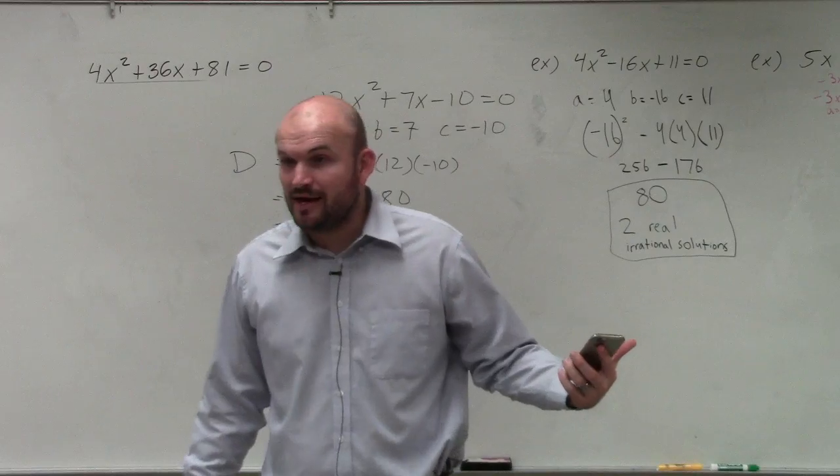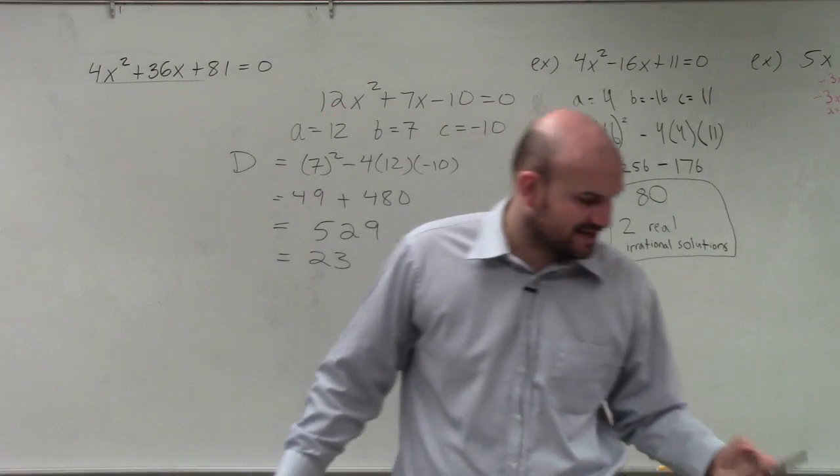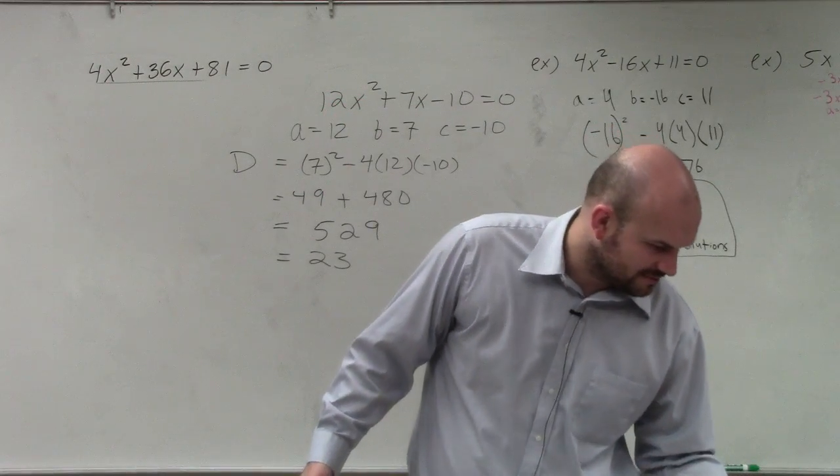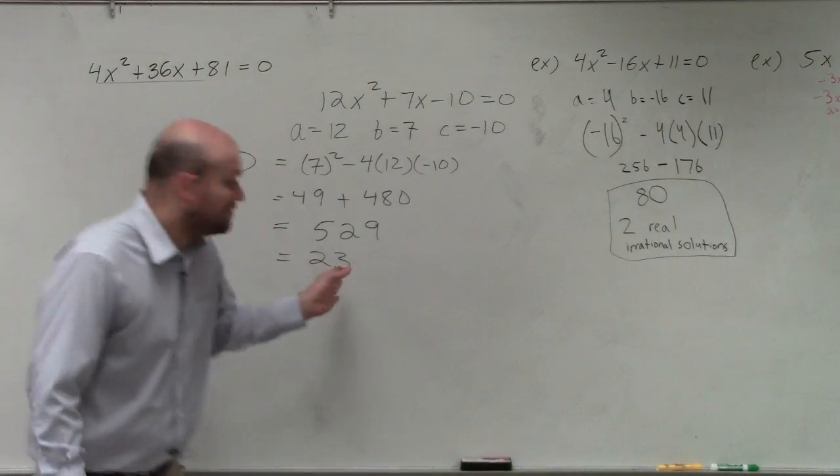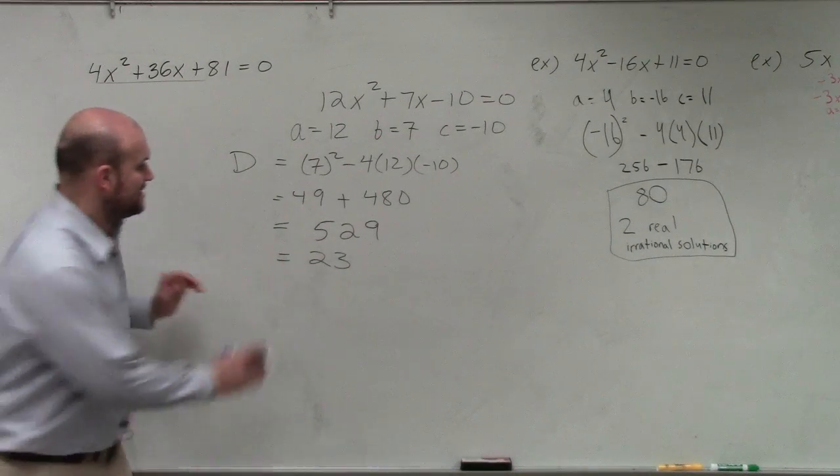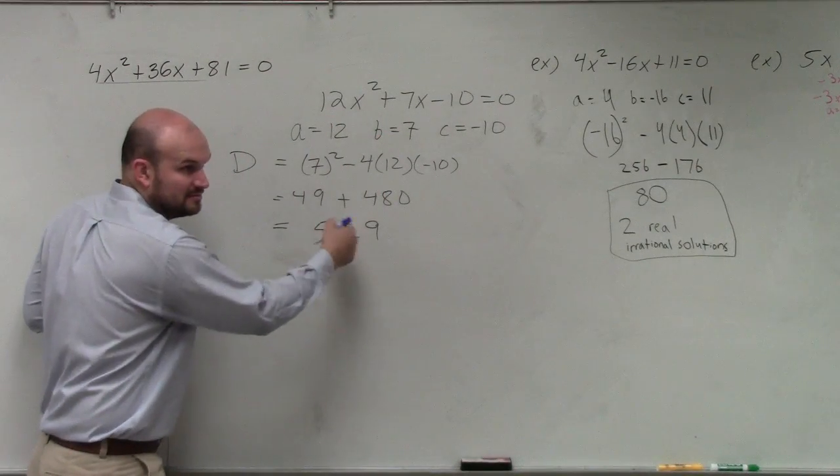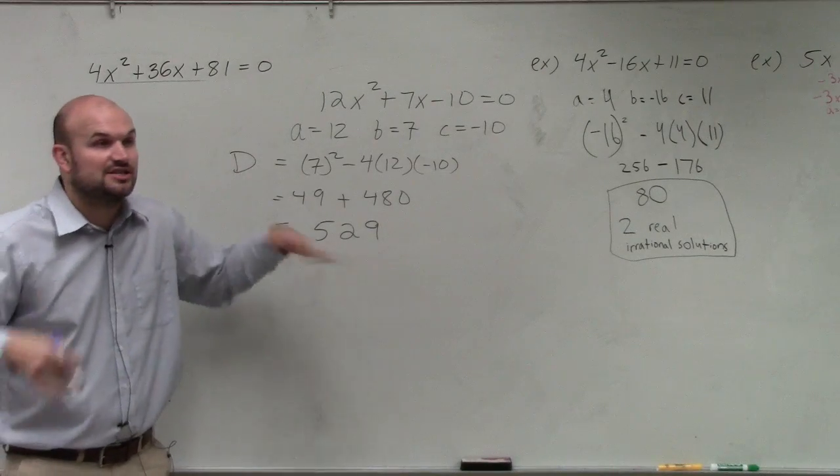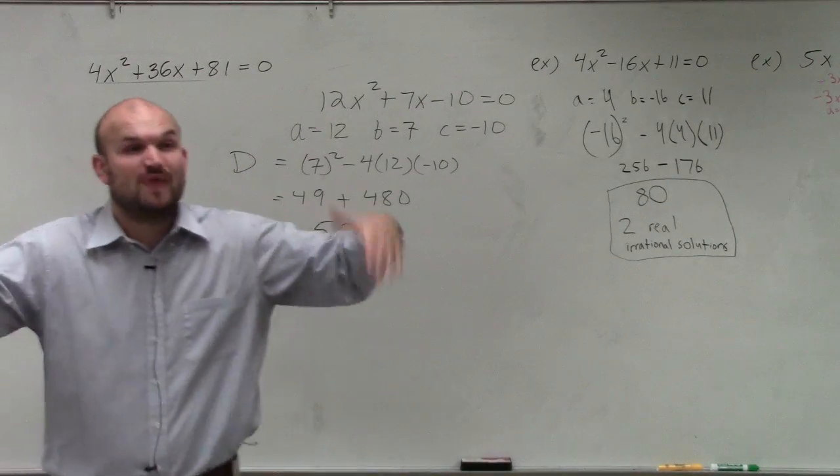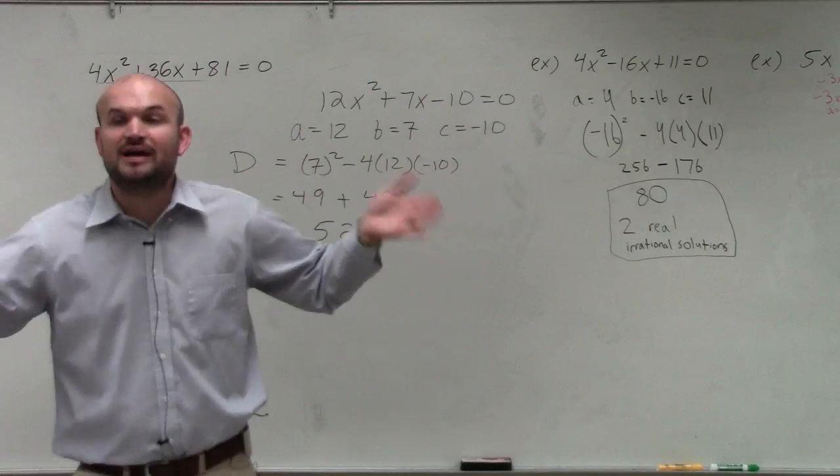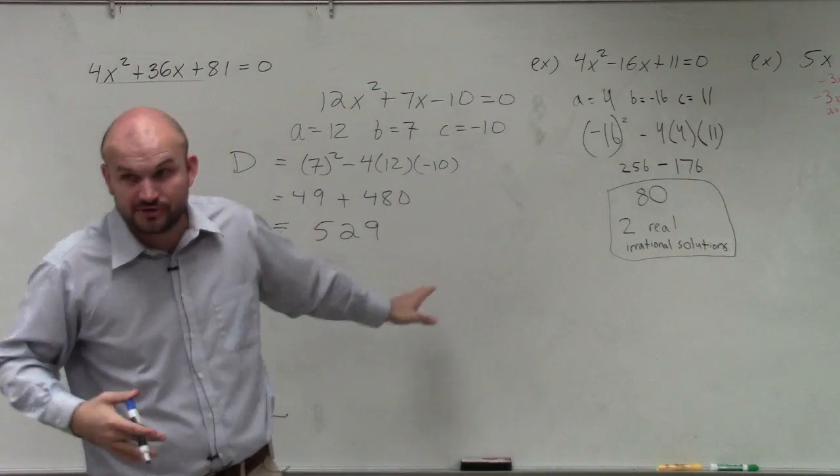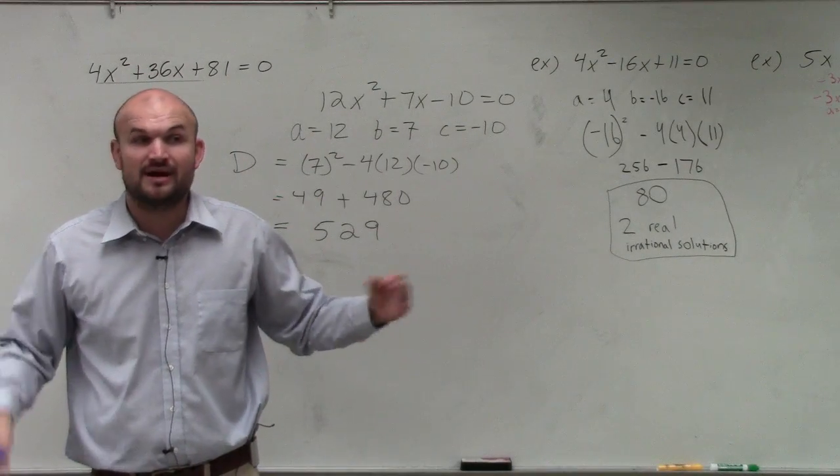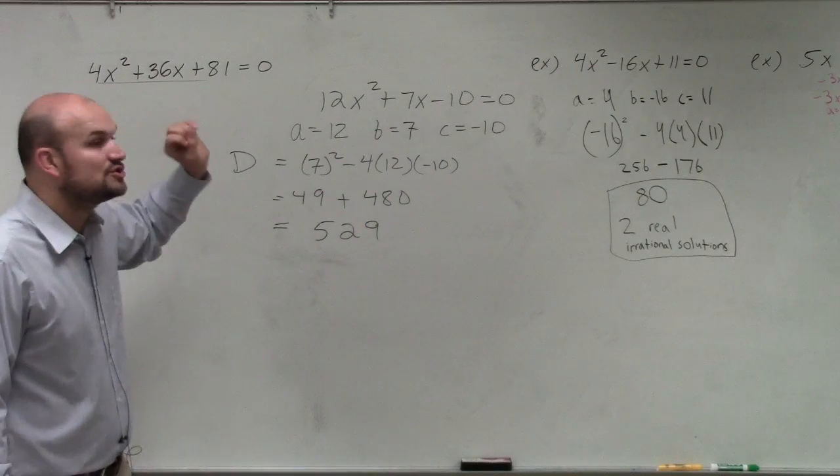So we have 23 as a square number, right? So it's a square number. So what does that tell us? So if we have a square number, what does that tell us? 529 is a square number. So that tells us we're going to have two real rational solutions. Right? If I told you guys to write down the real rational solutions, that's what you do. But that's not what we're doing today. Right now, what we're going to be doing is solving.